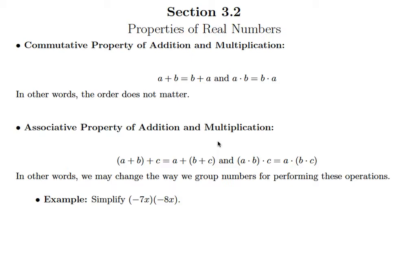What the commutative property of addition and multiplication says is that order does not matter. It doesn't matter what order you add in or what order you multiply in, you're going to get the same answer.